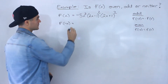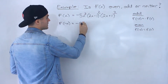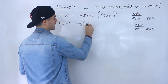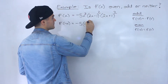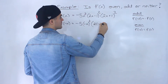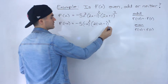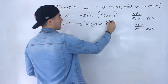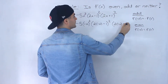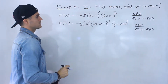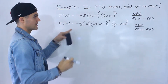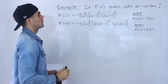So the first step is to plug in negative x for all the x values. We plug in negative x here, negative x here, and negative x here. Just took all the x values and plugged in negative x — make sure you put brackets there always.